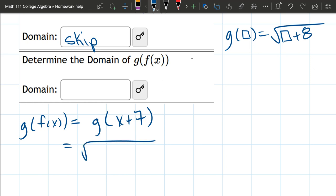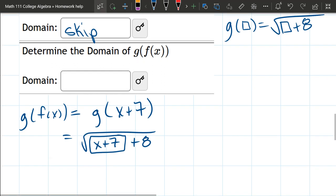So we have square root x plus 7, I'm going to take this box out in a minute, but x plus 7 plus 8, and I'll take it out on the next step here. All I did was put the x plus 7 inside the box.